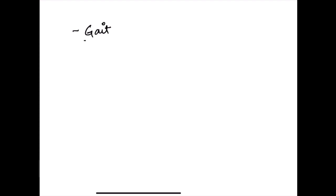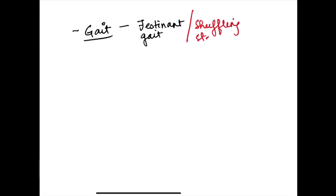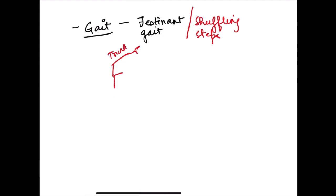Patients also have gait problems. They develop festinant gait with shuffling steps. Because of impaired initiation of movement, the trunk bends slightly forward. The patient tries to catch up with the shifted center of gravity by moving their legs fast, resulting in shuffling steps. This posture during walking is known as festinant gait.